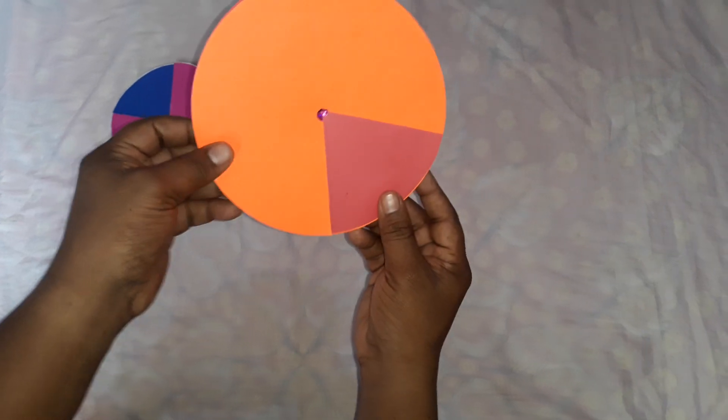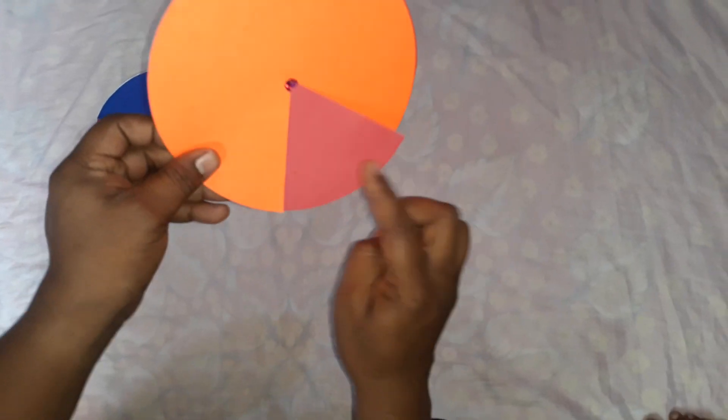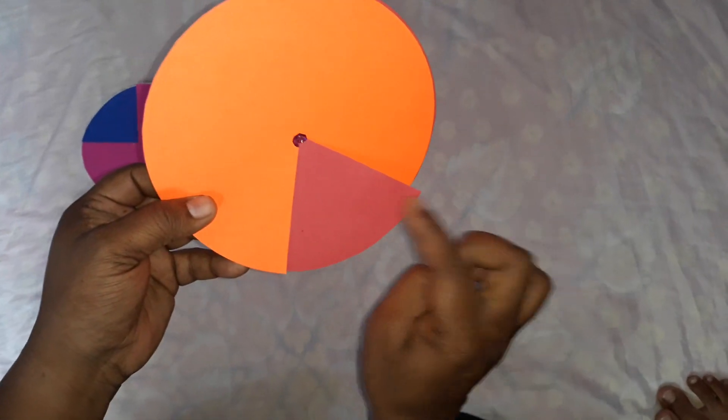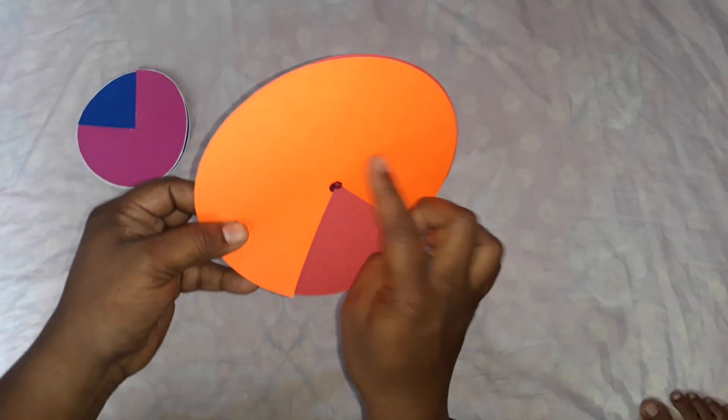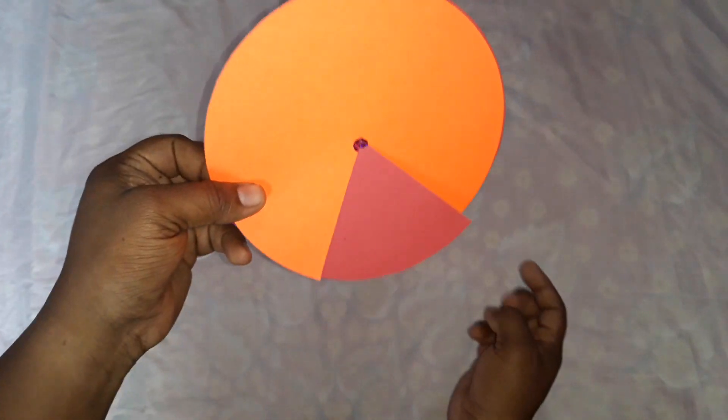I will rotate these circle discs like this to get a minor sector. This is a minor sector and this is a major sector. We can explain on both sides because this is very colorful.